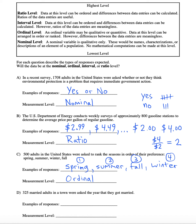325 married adults in a town were asked what year they got married. One possible response could be 2020, or perhaps 2010. Do the differences between years matter? Yes — you can subtract 2020 minus 2010 and say there are 10 years between these marriages. So it's certainly at least interval level.